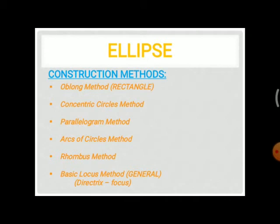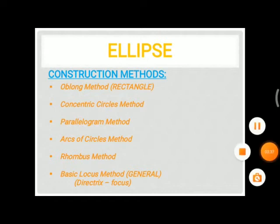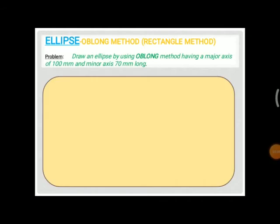These are the standard methods used to construct an ellipse in engineering drawing for any university or college. Now we begin with the first one — the oblong method, also known as the rectangle method. We will explain the method using an example problem. I am studying the question clearly before explaining it.